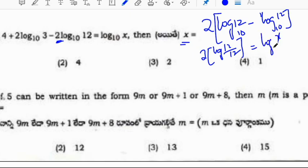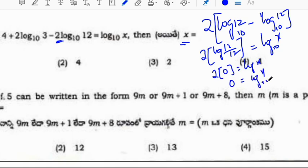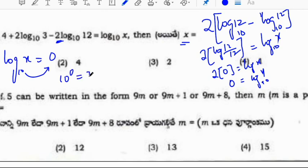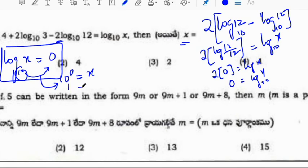Log 12 minus log 12 is log 1, and log 1 value is 0. So 2 times 0 equals log x, which gives log x base 10 equals 0. Converting to exponential form: 10 to the power 0 equals x. Since 10 to the power 0 is 1, x equals 1. The correct option is option 4.